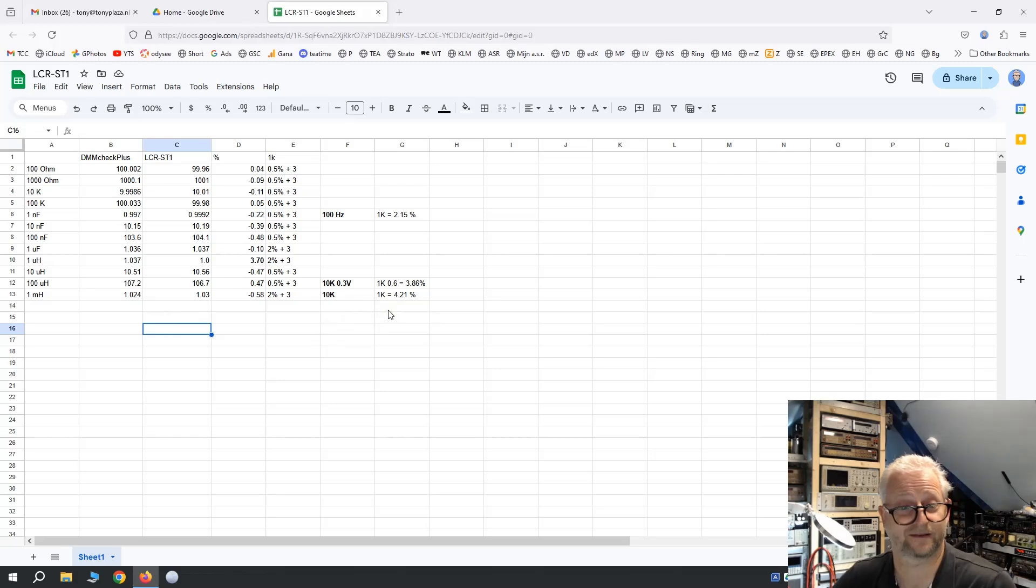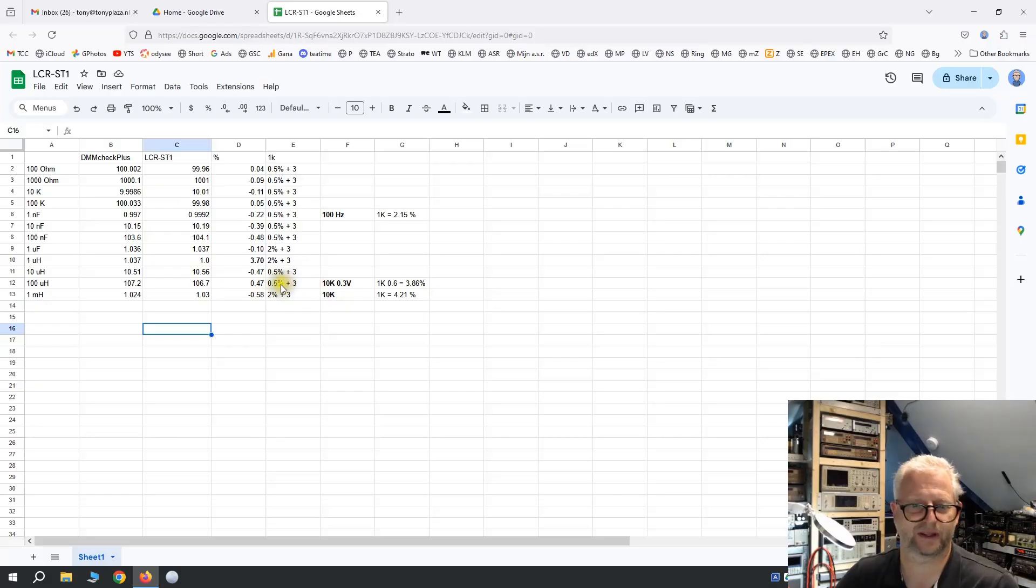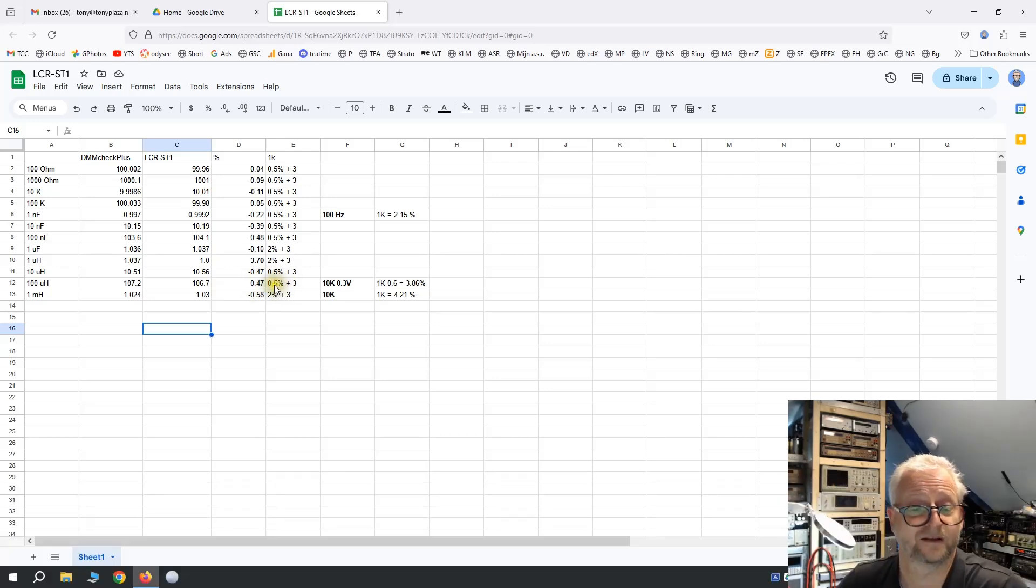I need to correct it. It is within specifications. I tried now not only 10kHz, but I also tried with 0.3 volts. And then I'm around 106.4 if I remember correct. And then we can add this three last digits, and then we are at 0.47, which is within this 0.5%.